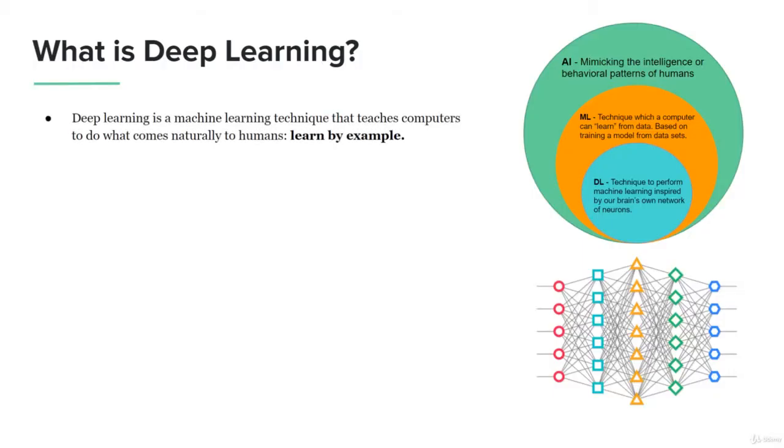Deep learning is a machine learning technique that teaches computers to do what comes naturally to humans: learn by example. If we look at the right hand side here, we can see that deep learning is essentially a part of the artificial intelligence hierarchy. You have AI, which is mimicking the intelligence of behavioral patterns of humans, and then machine learning, a technique where a computer can learn from data based on a training model from data sets, where we're inputting data and it's structured data so that the machine learning algorithm can learn from the particular data set. And then deep learning, this is a technique to perform machine learning inspired by our own brain's own network of neurons.